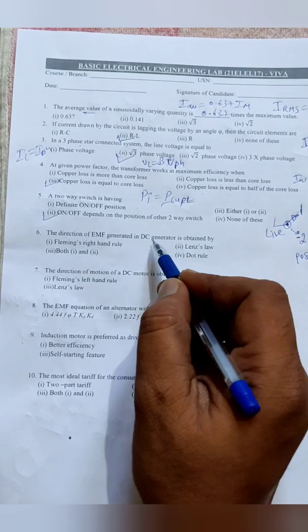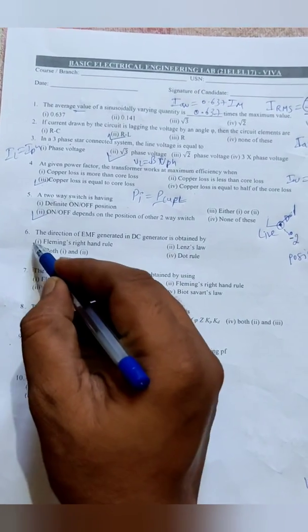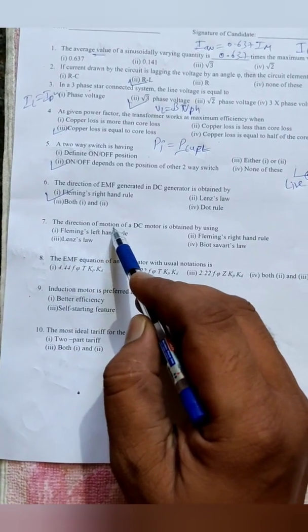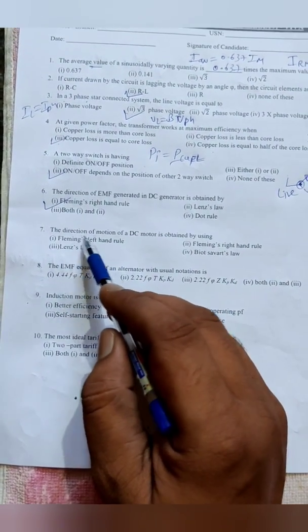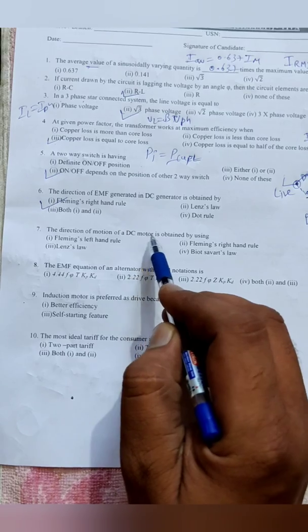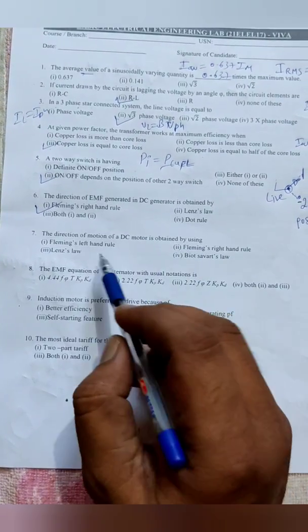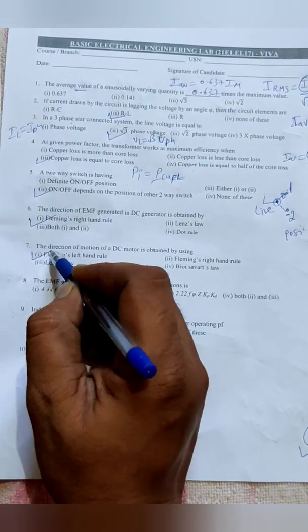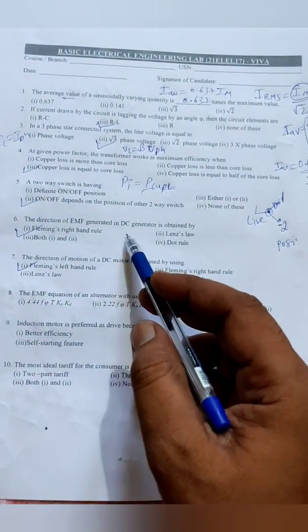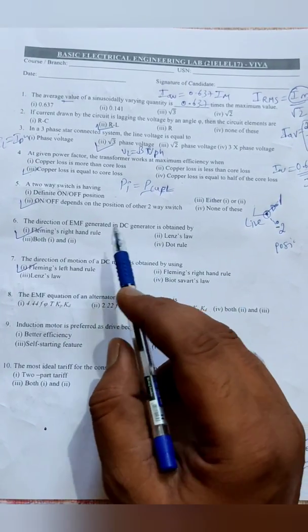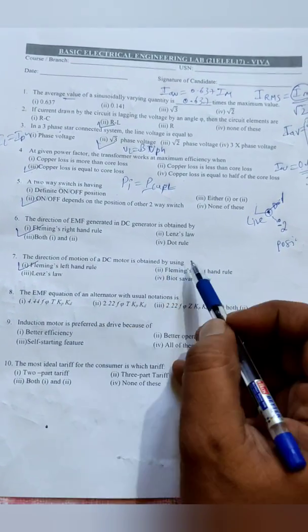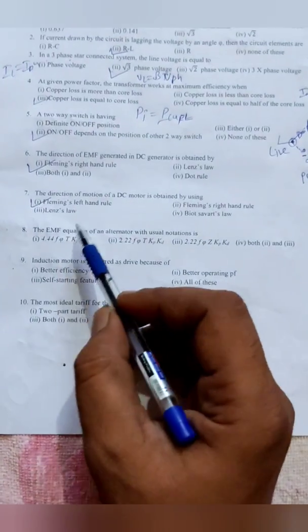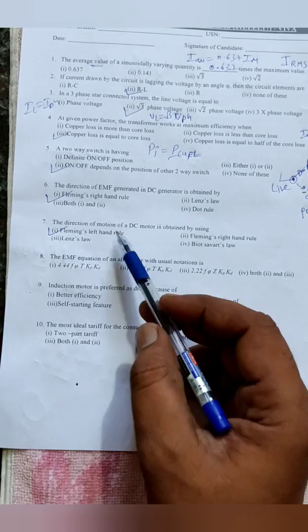The direction of EMF generated in DC generator is obtained by Fleming's right hand rule. This is a repeated question. Next, the direction of motion of a DC motor is obtained by using - in DC motor we are going to use left hand rule, Fleming's left hand rule. In DC generator right hand rule. DC or AC motor Fleming's left hand rule. Direction of motion and direction of force can be determined by left hand rule.